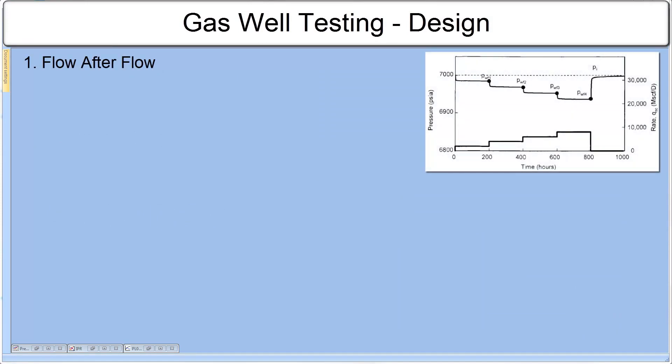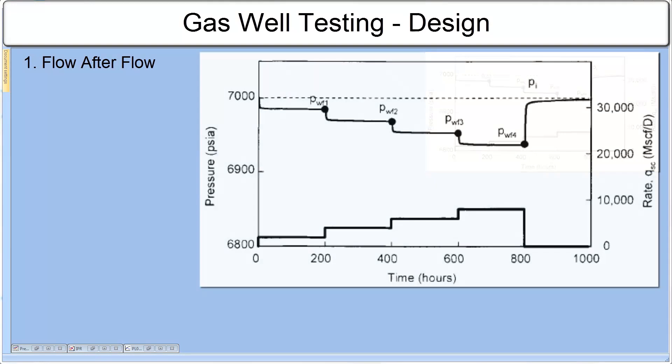With classic flow after flow, also called back pressure test, the well is produced to stabilize pressure at 3 or 4 increasing rates. The different flow periods have the same duration. The main assumption of the test is that pseudo-steady state be obtained during every drawdown. It is also a good practice to complete the flow after flow with pressure buildup period.